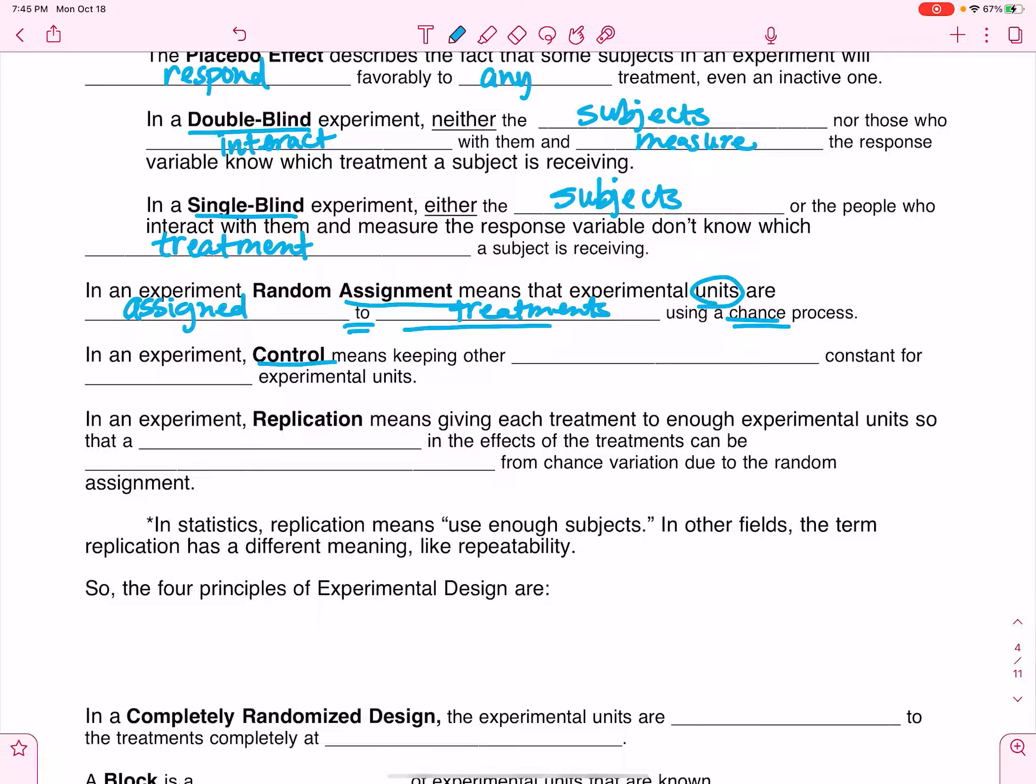In an experiment, remember that control means you're keeping all other variables constant for all of the experimental units. For instance, if I'm looking at testing a new weight loss supplement, wouldn't I want to make sure that I'm controlling everybody's diet to make sure that you're not eating something specific that's maybe causing the supplement to work or not work as well as it could be?